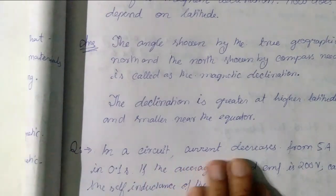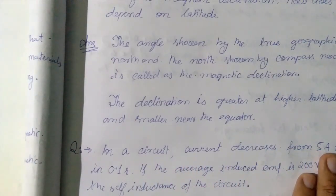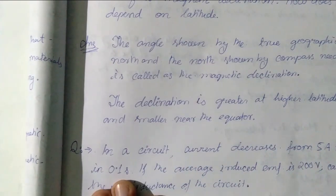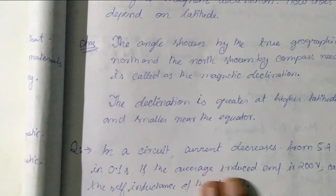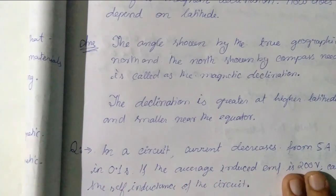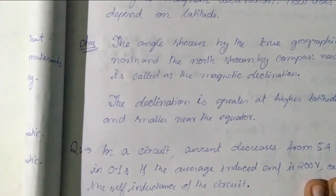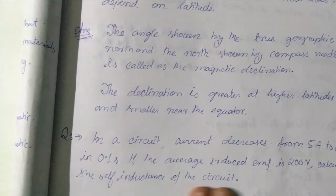In a circuit the current decreases from 5 ampere to 0 ampere in 0.1 second. If the average induced emf is 200 volt, calculate the self inductance of the coil.